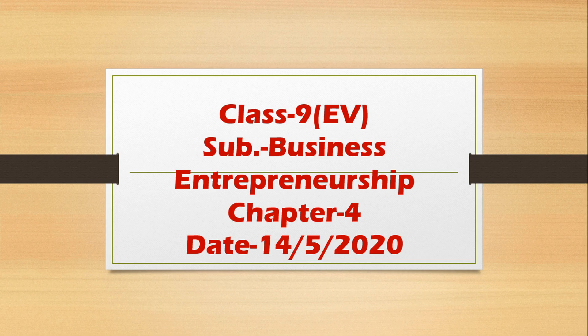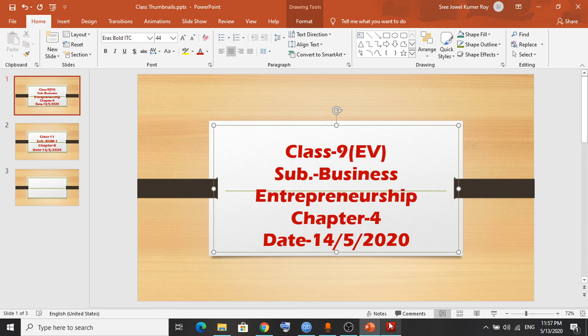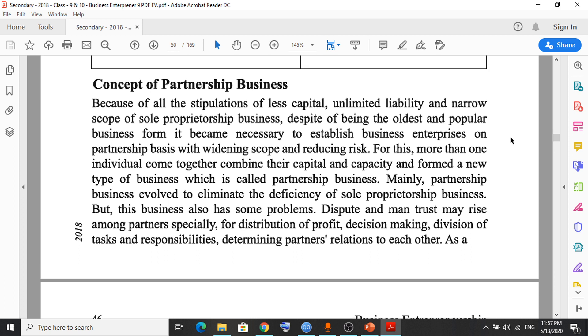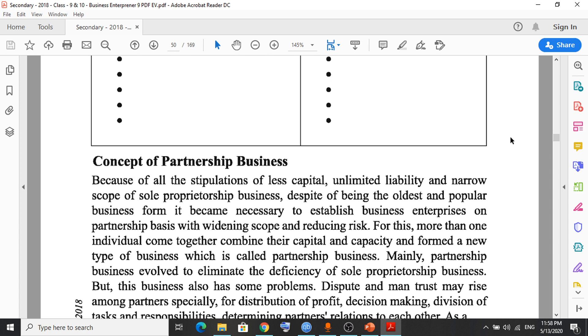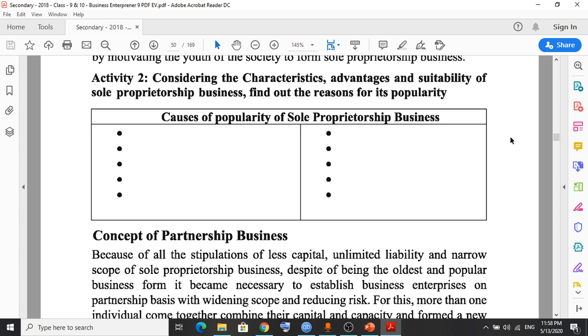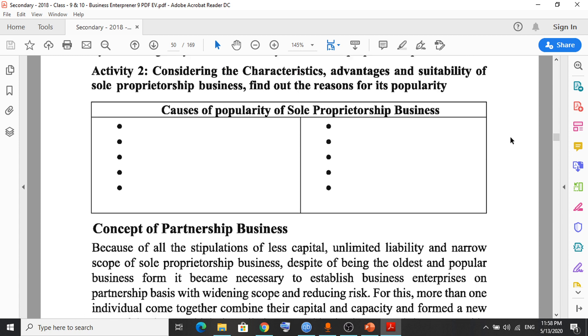Hello students, how are you? Hope you are staying home since the situation is going day by day, so please stay safe. This class is on Chapter 4, which we started yesterday. The chapter's name is 'Business Based on Ownership.' Depending on the number and type of owners, business can be categorized into five types. The first is sole proprietorship and the second is partnership business.